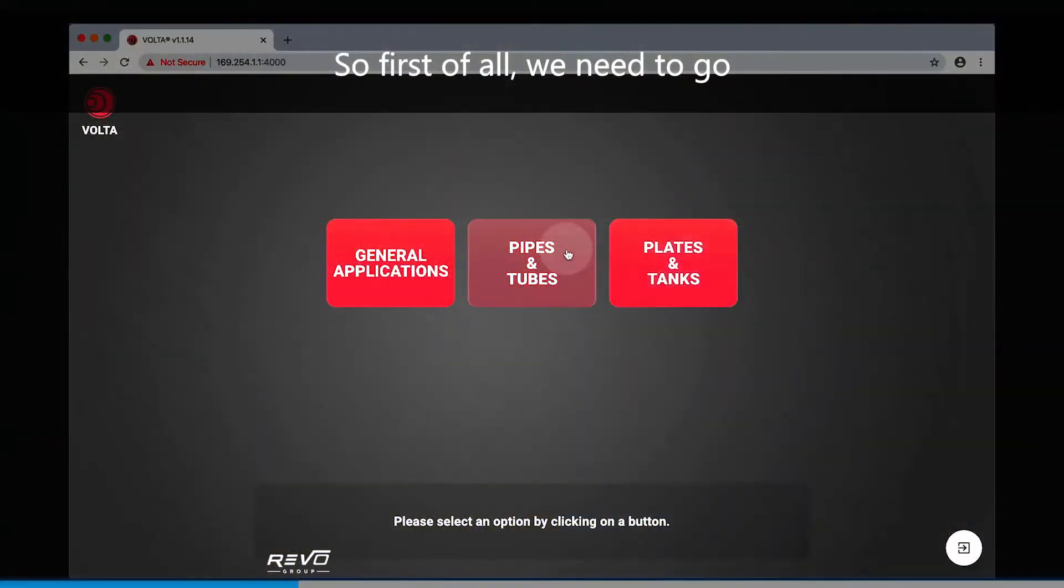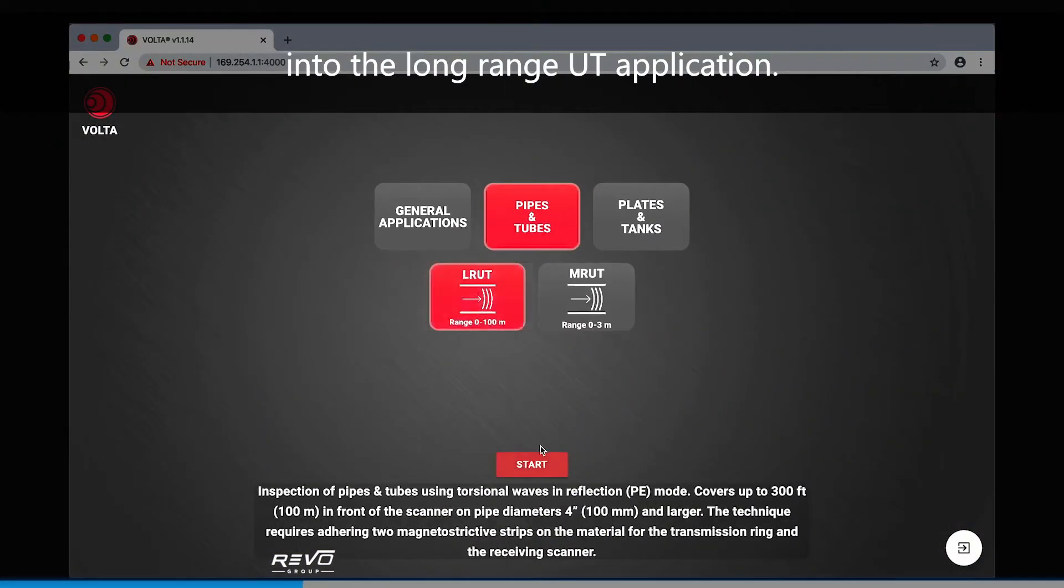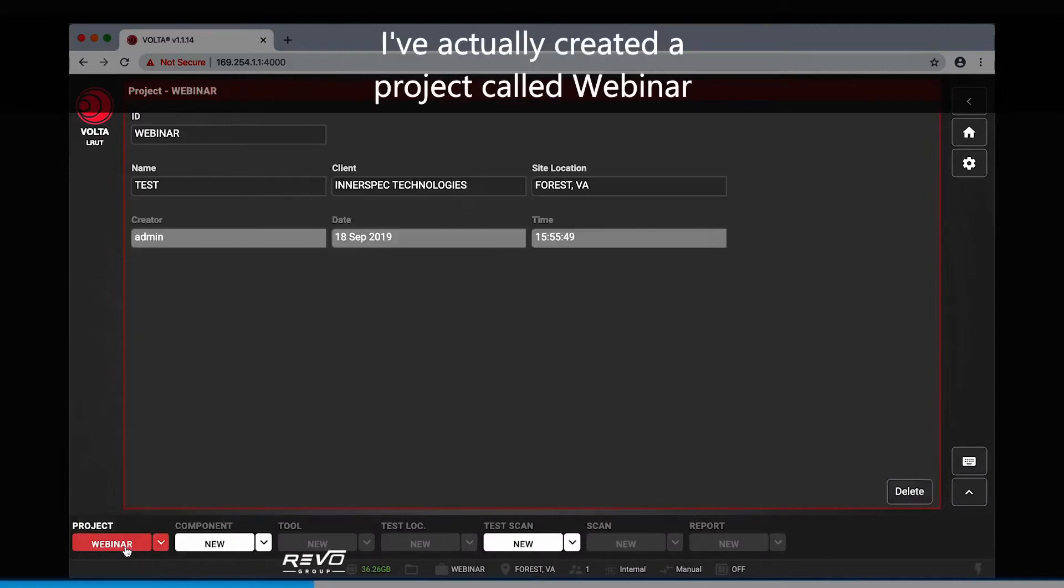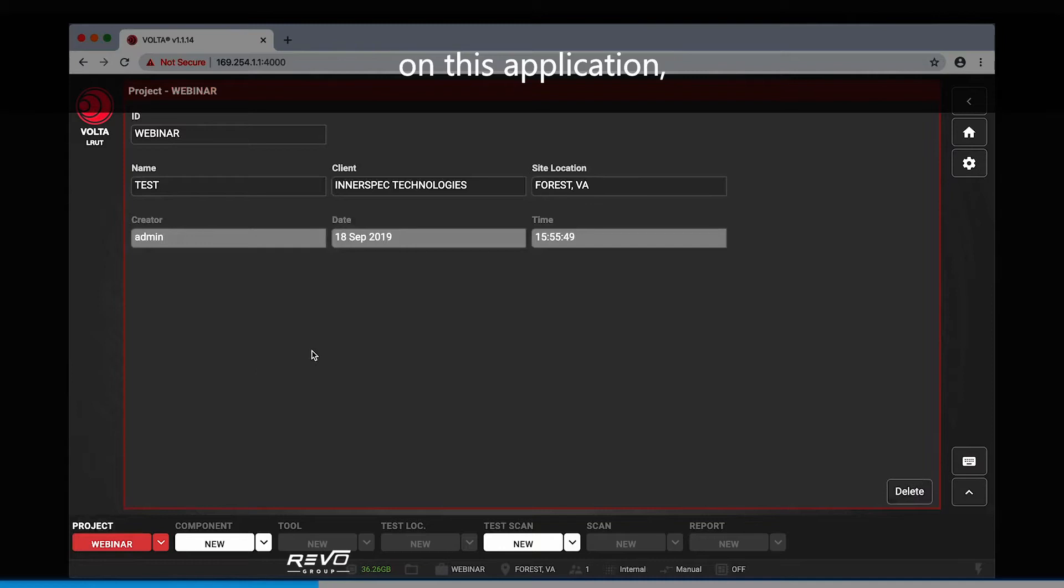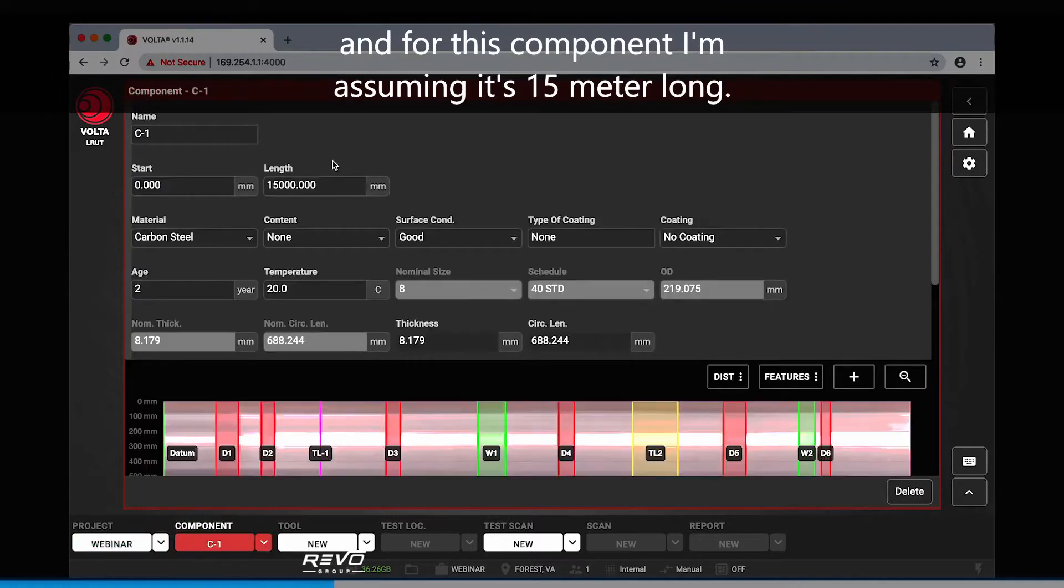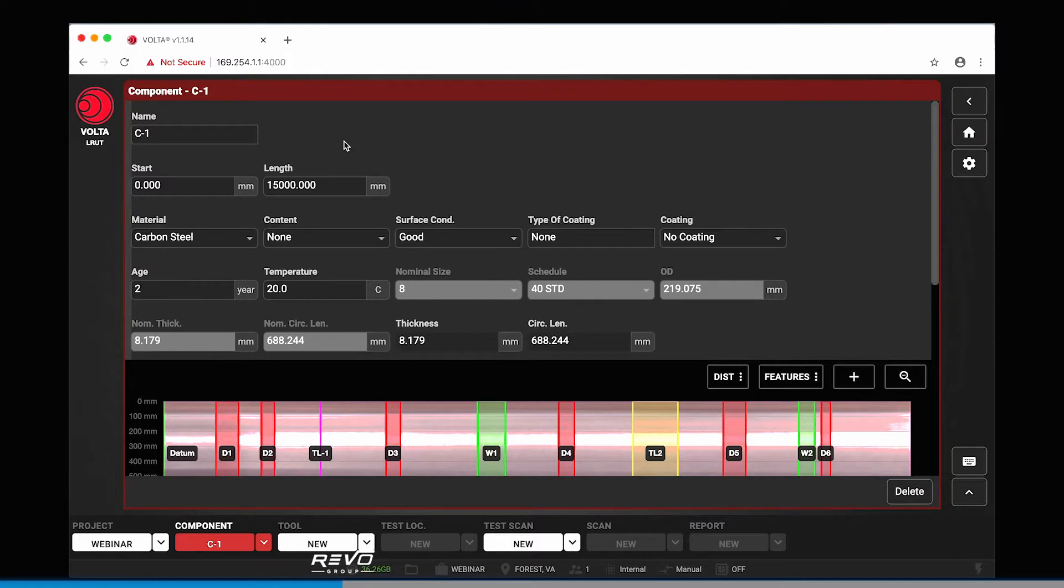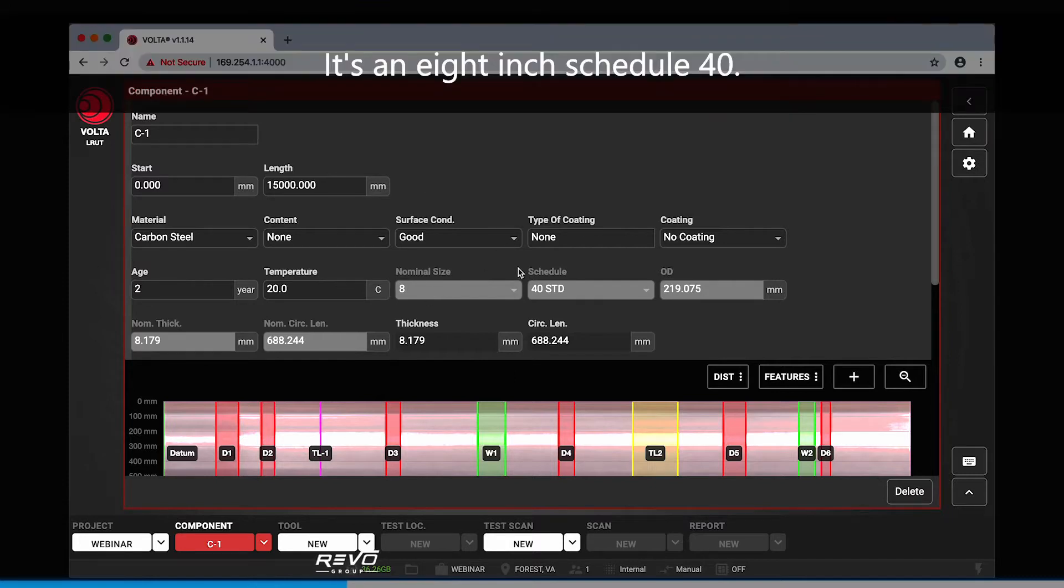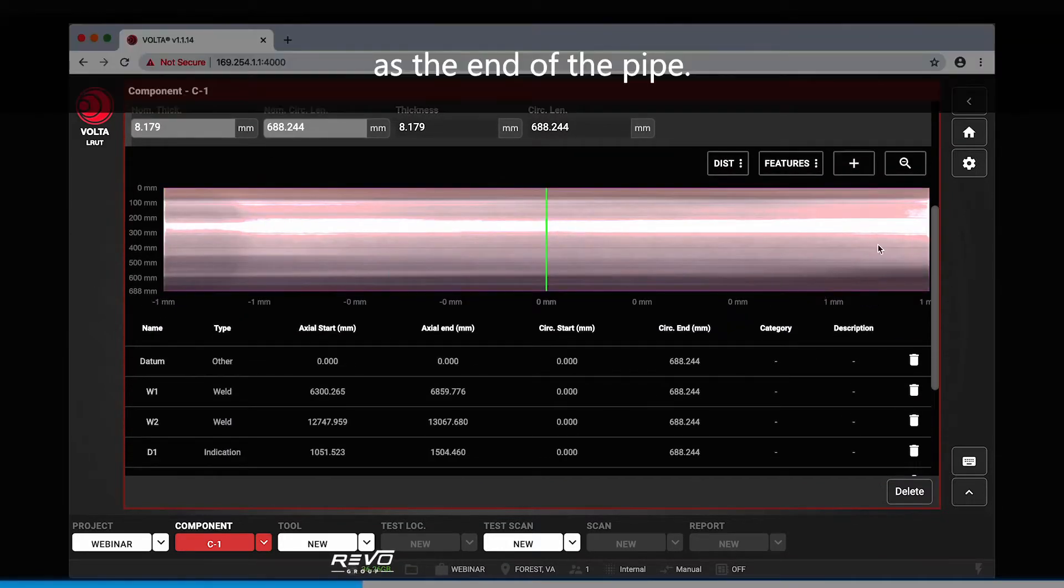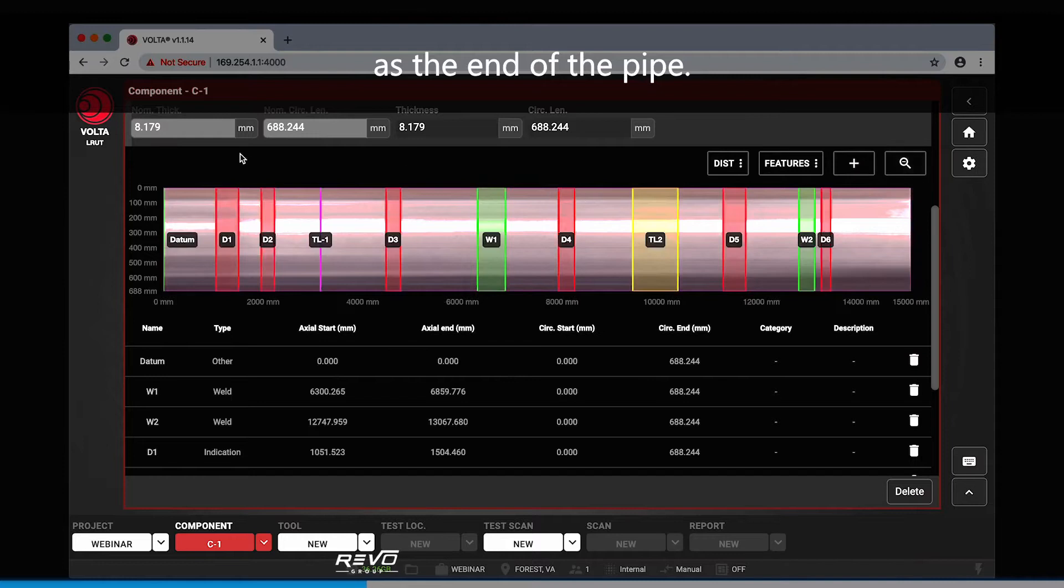First of all, we need to go into the Long Range UT application. I've actually created a project called Webinar on this application, and I've also created a component. For this component, I'm assuming it's 15 meter long. It's an 8 inch schedule 40, and I've put the datum as the end of the pipe.